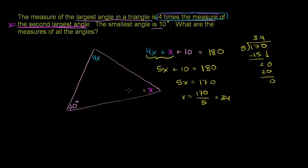So the second largest angle has a measure of 34 degrees. This angle up here is going to be 4 times that. So 4 times 34: that's 120 degrees plus 16 degrees, which is 136 degrees. 4 times 4 is 16, 4 times 30 is 120, 16 plus 120 is 136 degrees. So the three angles are 10 degrees, 34 degrees, and 136 degrees.